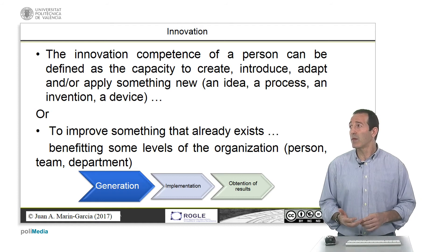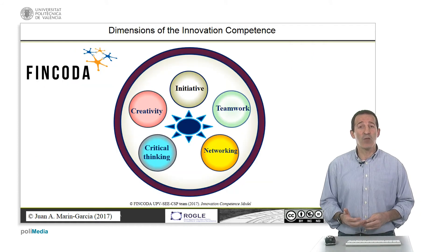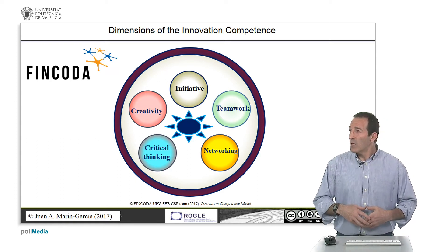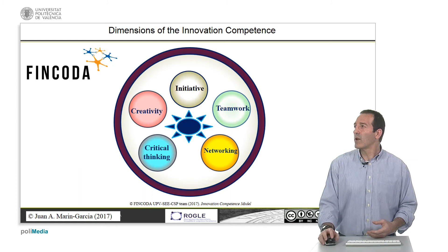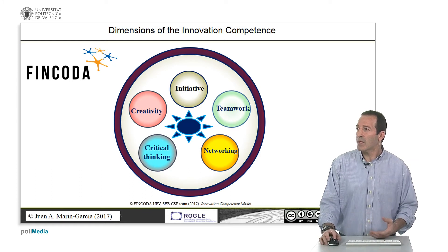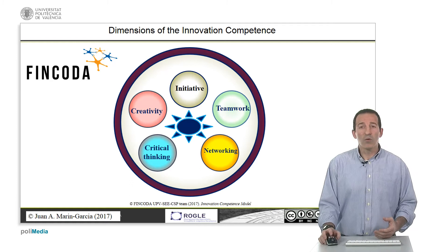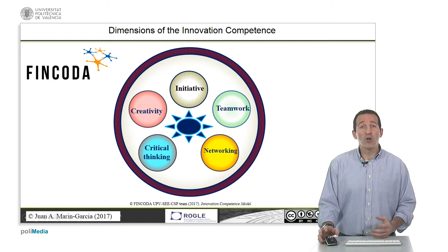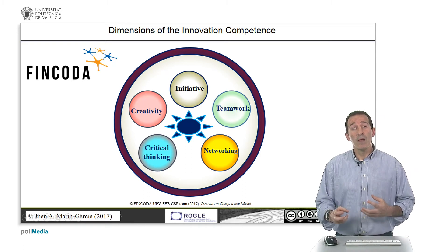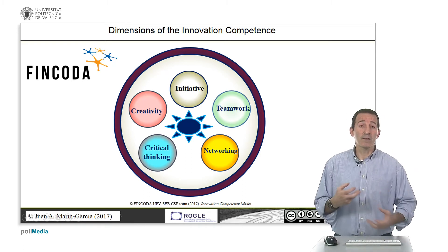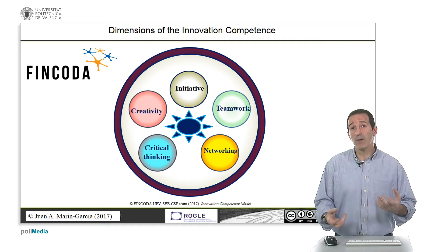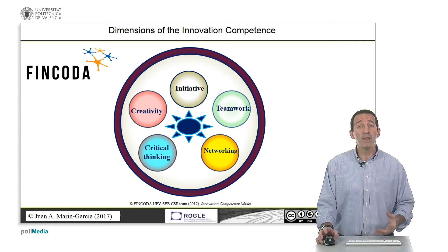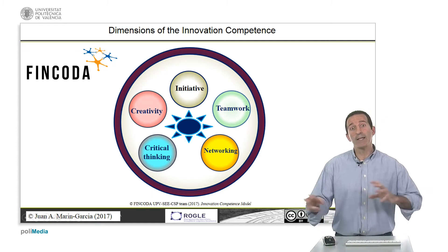This is the model that we have created in the FinCoder project. This is a European project, set up to explore the components of innovation competence based on creativity, on critical thinking — that is, the capacity to assess different alternatives — on initiative, especially with regard to the implementation of ideas, on the ability to work in a team, and on the ability to network with people from outside our team. These are the five components of the FinCoder model of innovation.